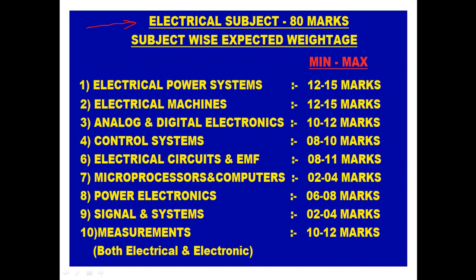For Part 2, which is 80 marks on electrical subjects, here is the subject-wise minimum to maximum marks range. Power Systems: 12 to 15 marks. Electrical Machines: 12 to 15 marks. Analog and Digital Electronics: 10 to 12 marks. Control Systems: 8 to 10 marks. Electrical Circuits and Electromagnetic Fields: 8 to 11 marks. Microprocessors and Computers: 2 to 4 marks.